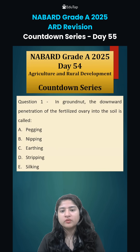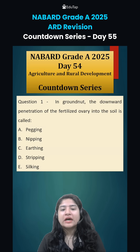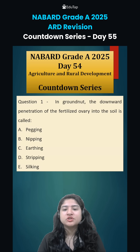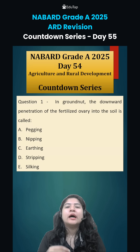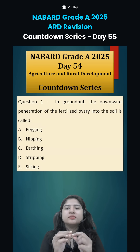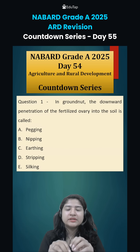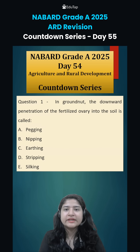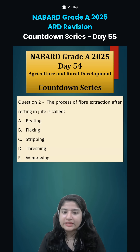Yesterday, question number one was: in groundnut, the downward penetration of fertilized ovary into the soil is called what? Basically, we know that in groundnut, there is the covering and what happens — it grows inside the soil. That particular process is known as pegging.